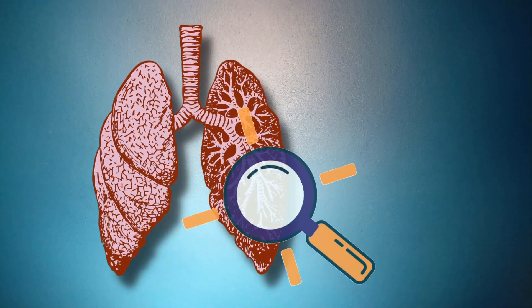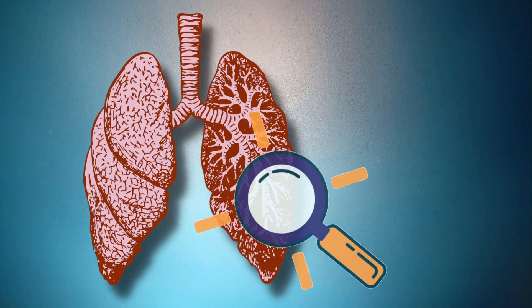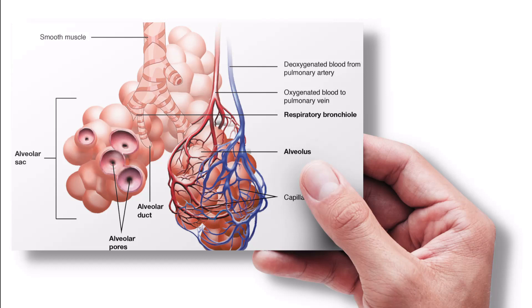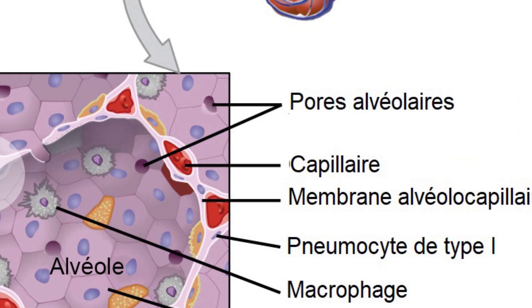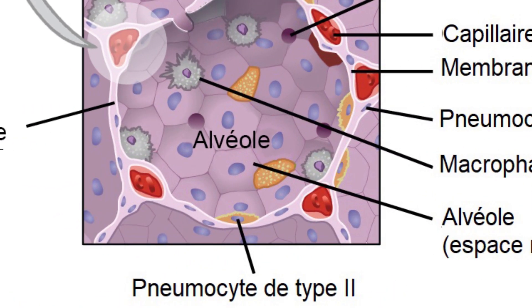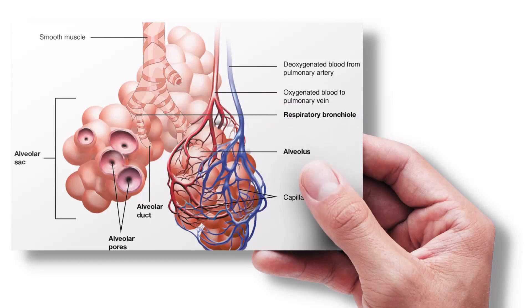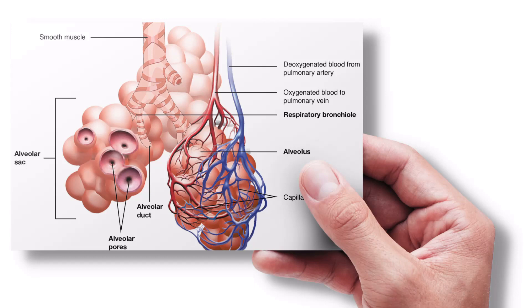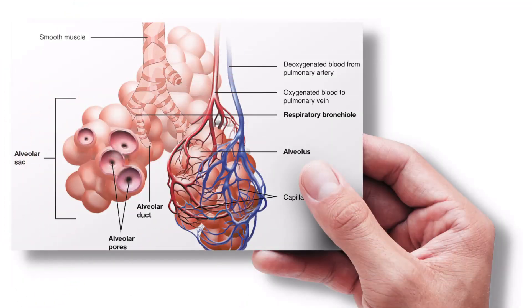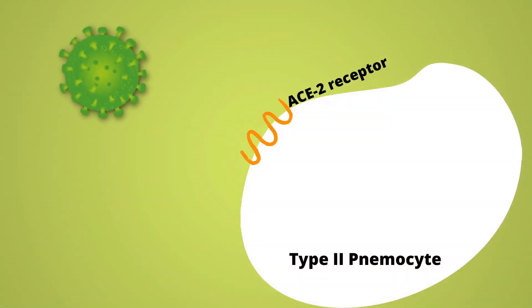The ACE2 receptors are present on the type 2 pneumocytes of your alveoli. When we look inside the lungs, we see the structural and functional units — the alveoli. Each alveolus is made up of two cell types: type 1 pneumocytes, involved in respiratory gas exchange, and type 2 pneumocytes, which maintain surface tension. The surfaces of the alveoli are highly vascularized with a rich network of capillaries from the pulmonary vein and artery.